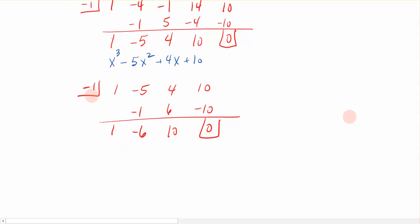What have I got so far? Well, I have a function that has roots at x plus 1, because it's a negative 1 for the root. And I did that twice. And that left me with this quadratic, which was x squared minus 6x plus 10.